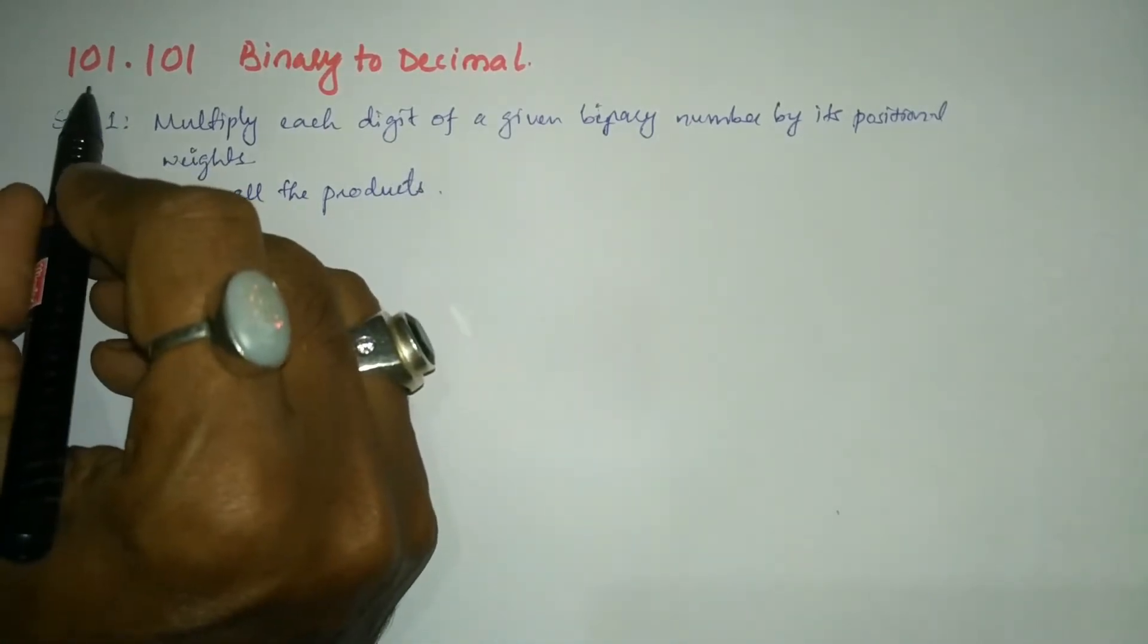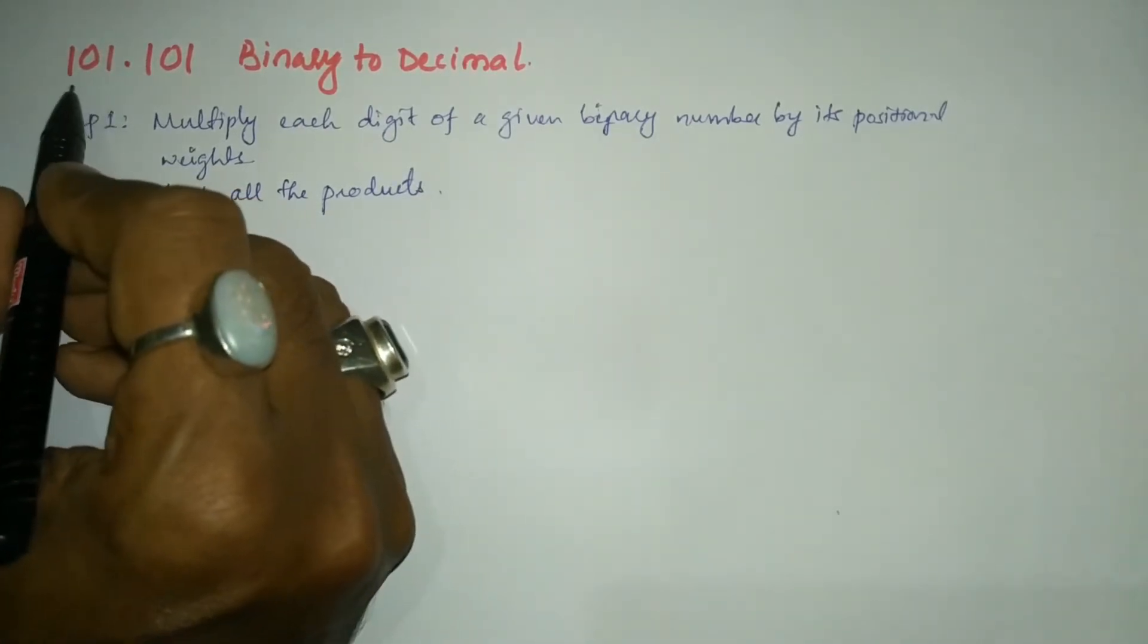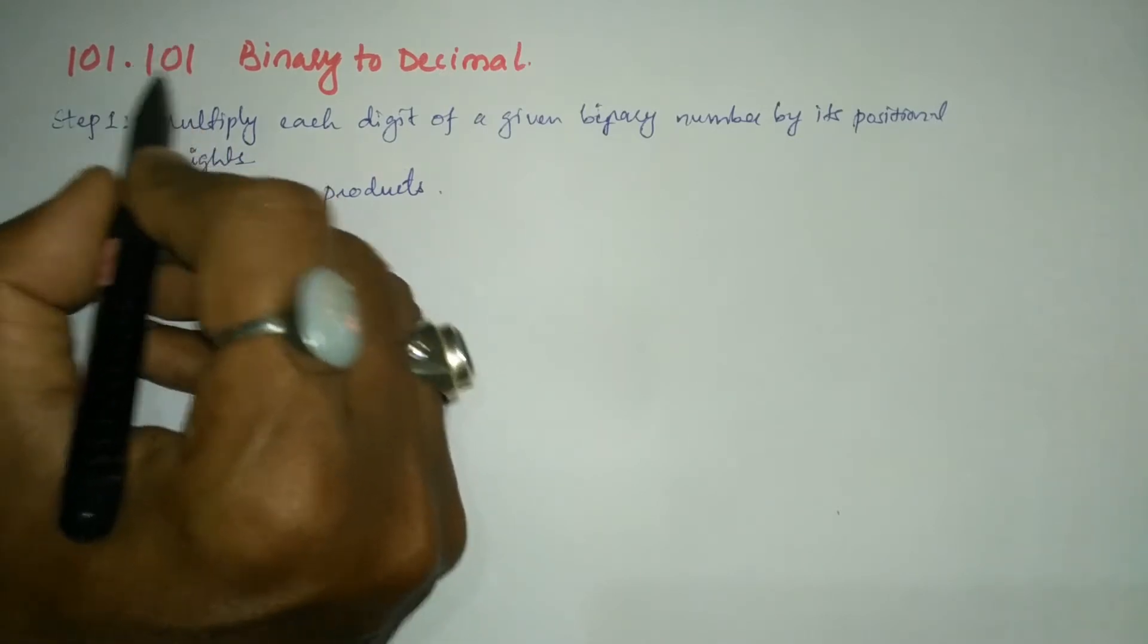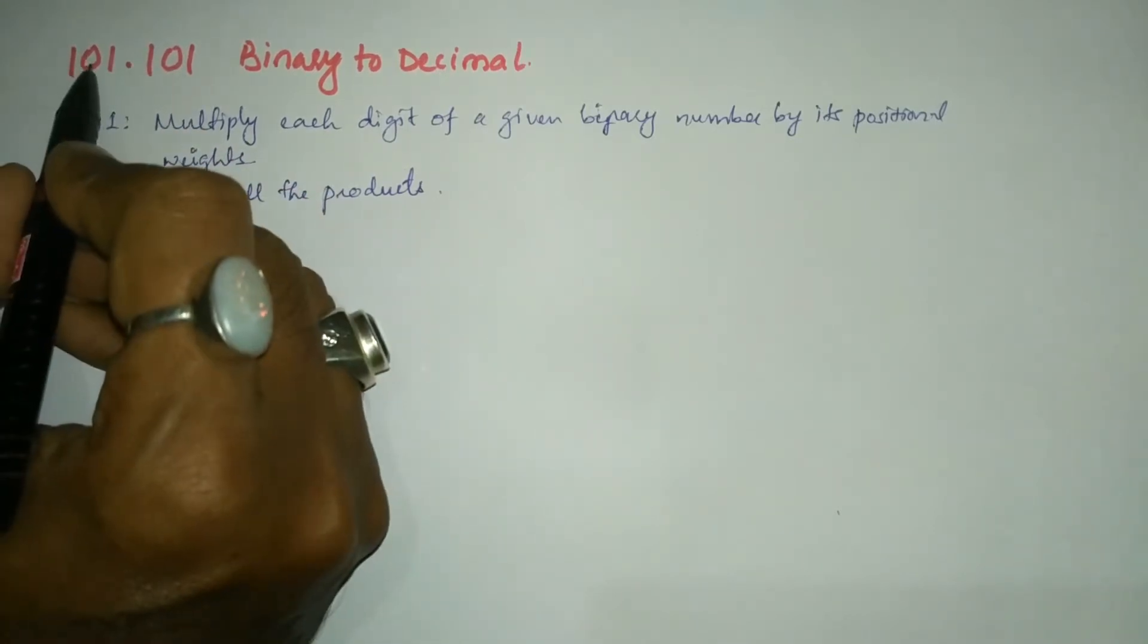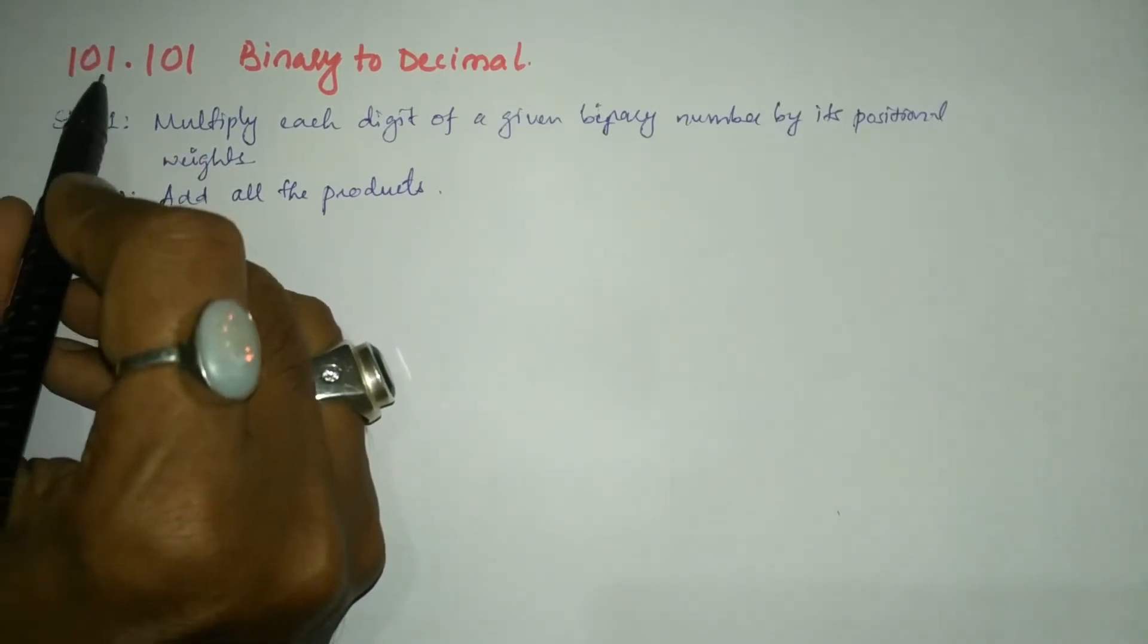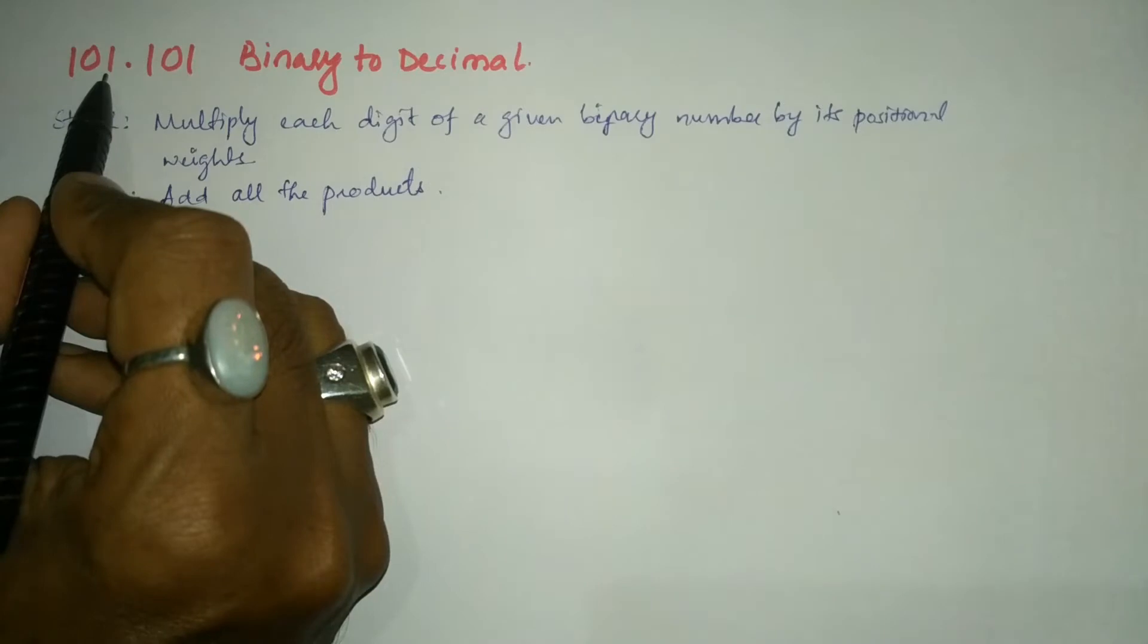Now you can see here we have been given a fractional binary number. So after the decimal point we have the fractional number. Before the decimal point we have the whole binary number. From the right hand side of the whole binary number we have to start counting the positional weight of these digits.